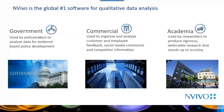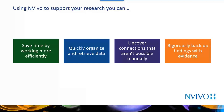Because of this, NVivo is the global number one software for qualitative data analysis across all different markets — from government and commercial to academia. The key reasons people turn to software such as NVivo is that it saves time. You're working far more efficiently, with pretty much everything in one place. You can quickly organize and retrieve data, uncover connections that aren't possible manually, and most importantly, rigorously back up your findings with evidence.